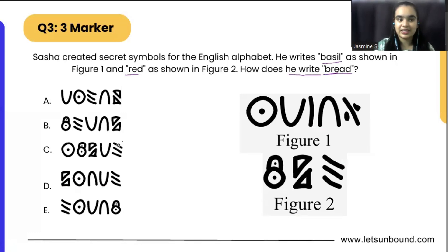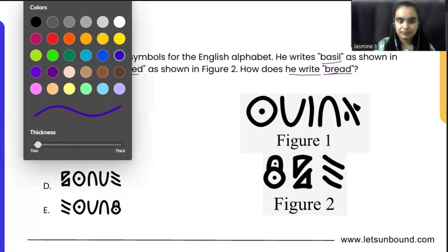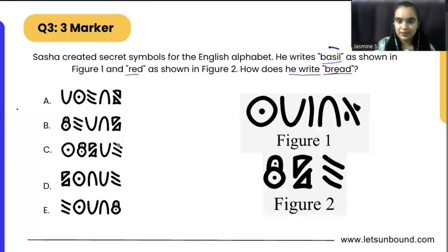Very easy question. What we have to do? We read the question. We got two words, Bessel and red. Just write down red here and Bessel here.